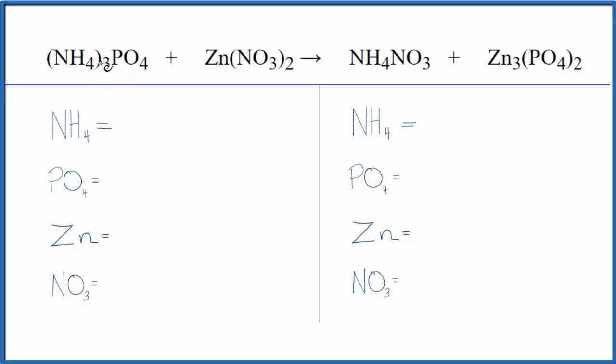So I have one ammonium ion times three, one phosphate ion, one zinc atom, and then two nitrate ions on the reactant side. On the product side: one ammonium, two of these phosphates here, three zinc, and then just one nitrate.